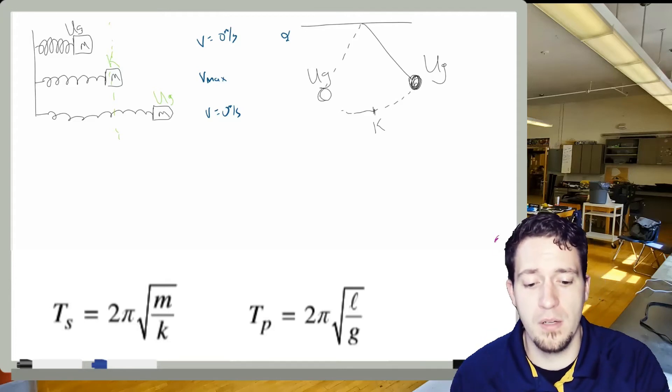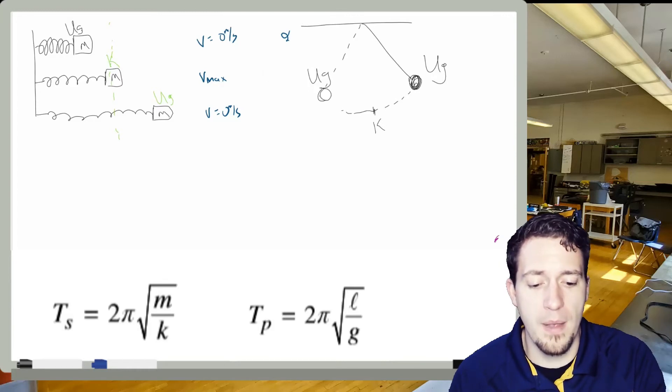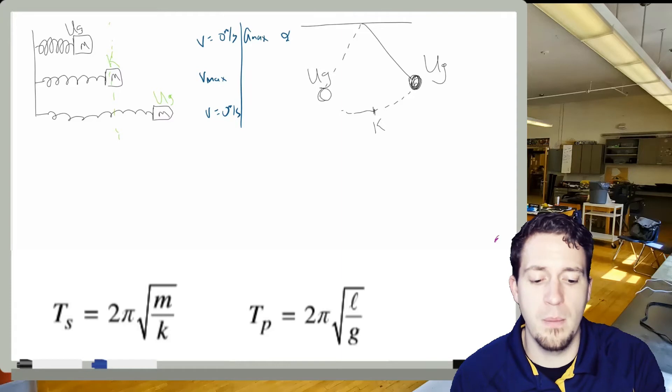Now, this is in stark comparison actually to accelerations. Acceleration is at these outer points. Acceleration is actually a maximum at those outer points. So we think about why that makes sense.